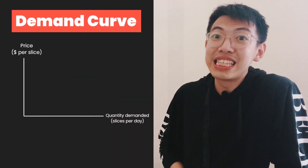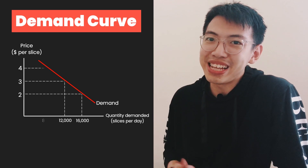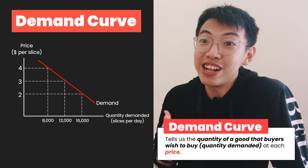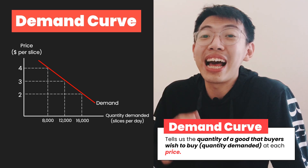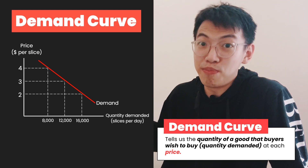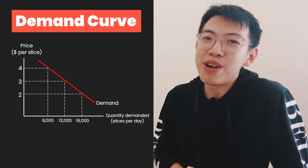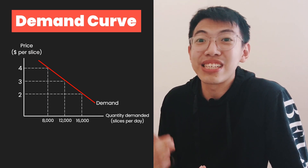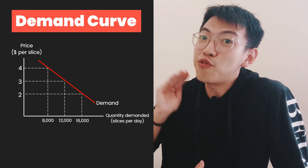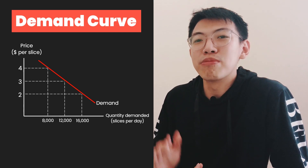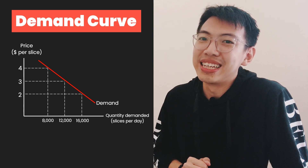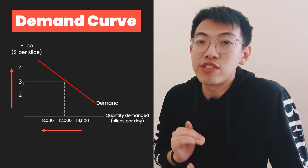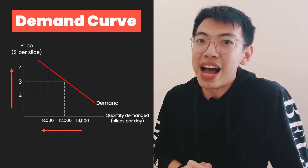I will use a pizza illustration as an example. This is the demand curve of pizza. The demand curve tells us the quantity of a good that buyers wish to buy — the quantity demanded — at each price. When the price is $2 per slice, the quantity demanded is 16,000 slices per day. But when the price is $4, the quantity demanded becomes only 8,000 slices per day. As the price increases, the quantity demanded decreases, and vice versa. This makes the demand curve have a negative slope.